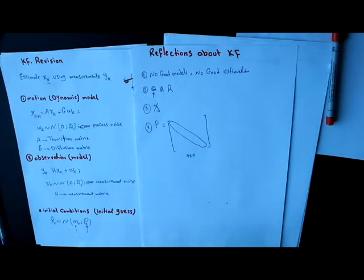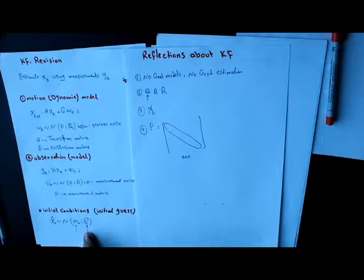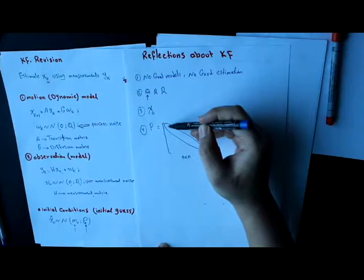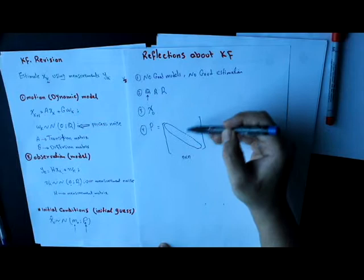Usually, we start or we initialize the covariance matrix as a diagonal square matrix. So we initialize it with the covariance of the error, of the estimated error of the x components and zeros elsewhere.